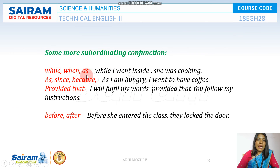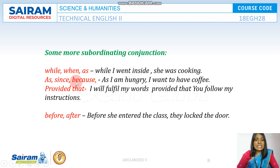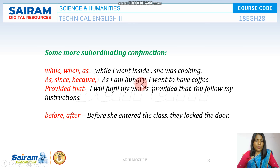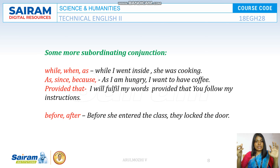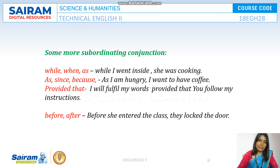"While", "when", and "as" are all equal in meaning. For example, "While I went inside, she was cooking" or "When I went inside, she was cooking." "As", "since", and "because" also connect action and reason. For example, "As I am hungry, I want to have some coffee" or "Because I am hungry, I want to have some coffee" — they connect reason and action.